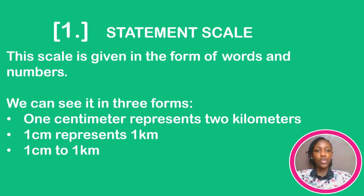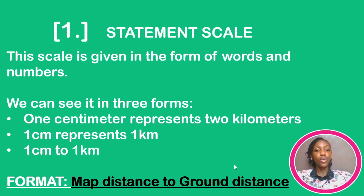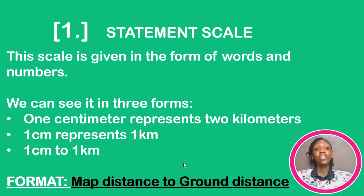Try to guess which part represents the map distance and which one represents the actual distance on the ground. The word 'represents' gives it away — it's always in the form of map distance to ground distance. So the first one is the map distance while the second one is the ground distance. You'll hardly see these formats at the bottom of given maps in your practicals, but they'll most likely appear when you're asked to convert from one scale to another in your objectives.